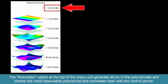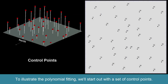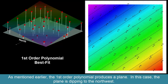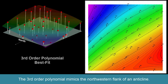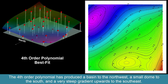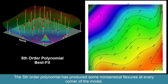The automatic option at the top of the menu will generate all six polynomials and choose the most reasonable one that correlates best with the control points. To illustrate the polynomial fitting, we'll start out with a set of control points. The first order polynomial produces a plane dipping to the northwest. The second order polynomial produces a curved surface similar to the flank of a dome also dipping to the northwest. The third order polynomial mimics the northwestern flank of an anticline. The fourth order polynomial has produced a basin to the northwest, a dome to the south, and a very steep gradient upwards to the southwest. The fifth order polynomial has produced some nonsensical flexures at every corner of the model.